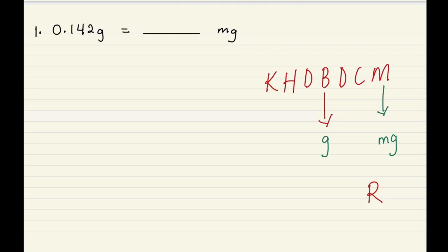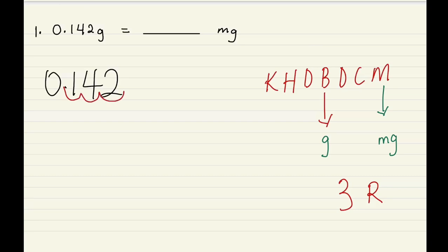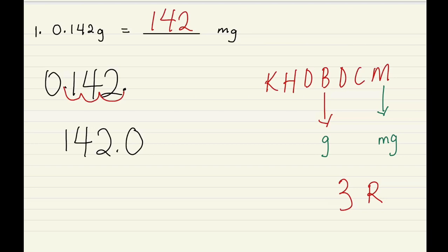So let's rewrite the question: 0.142. We move the decimal point three steps to the right — one, two, three — and the new decimal point lands here. Our answer is 142.0, and the .0 isn't necessary, so the answer is simply 142 milligrams.